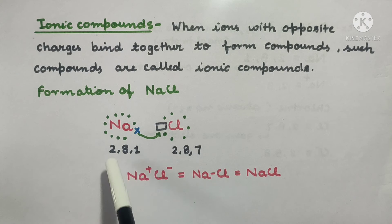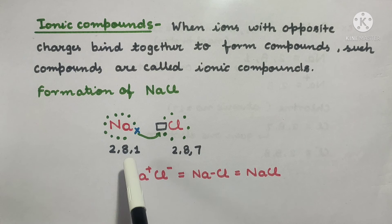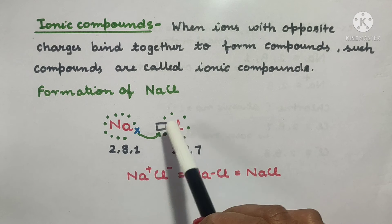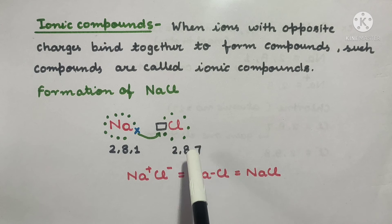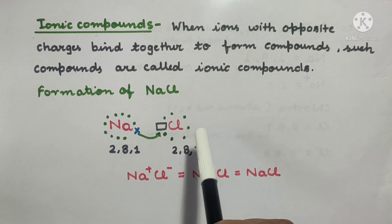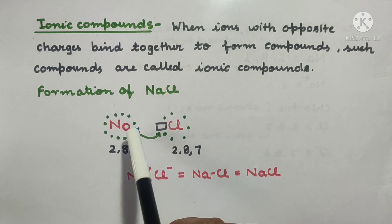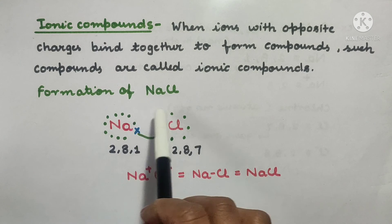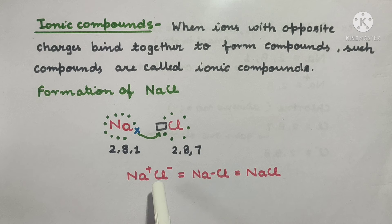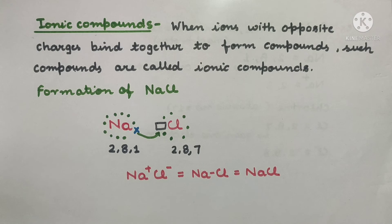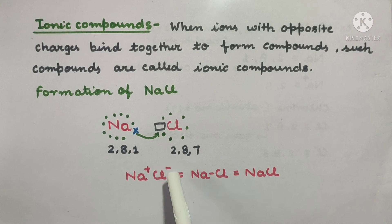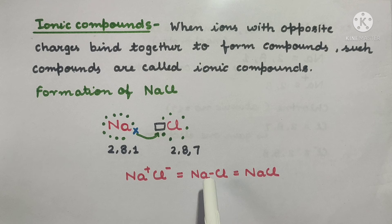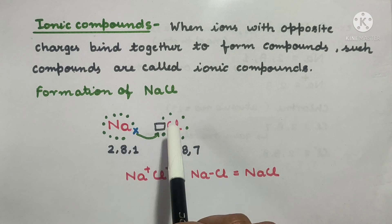Let's see the formation of NaCl. Sodium has the electronic configuration 2, 8, 1 — it has 1 electron in its outer shell, so it loses that electron and becomes Na+. Chlorine has the electronic configuration 2, 8, 7 — it needs 1 electron, so it takes 1 electron from sodium and becomes Cl-. Na+ and Cl- are joined by an ionic bond, forming the compound NaCl.